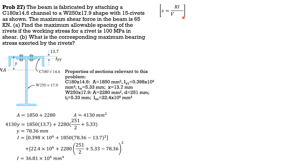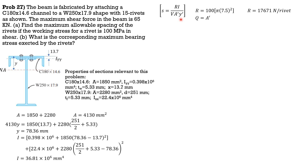We can now solve for spacing s using the formula s = R·I / (V·Q). The resistance per rivet R is 100 MPa × π × 7.5² = 17,671 N per rivet. Note there are two rivets, so the total resistance is 2 × 17,671 N. Now we solve for Q, which is area prime times y prime — that should be for the channel, since shear failure occurs at that section.